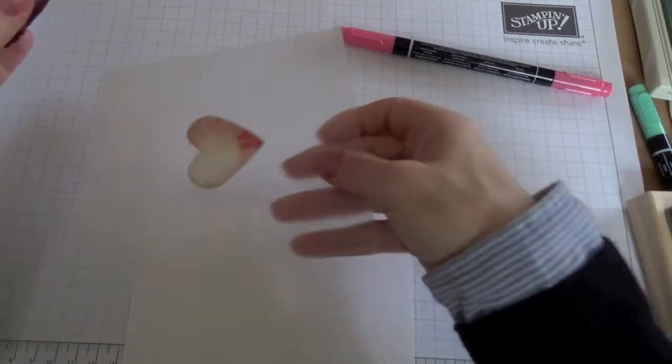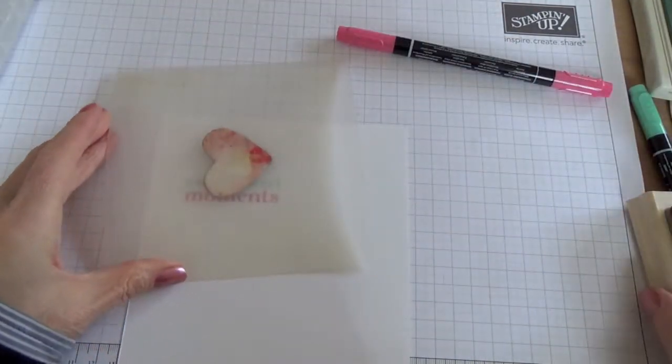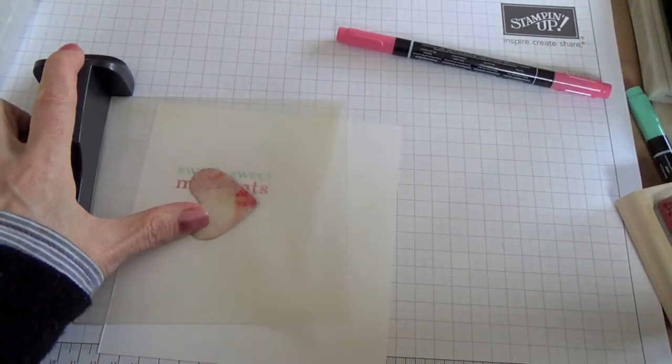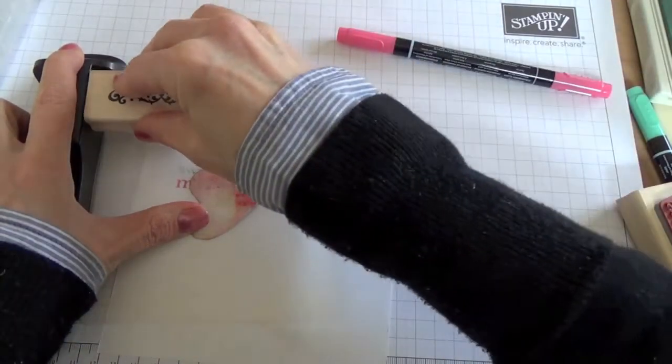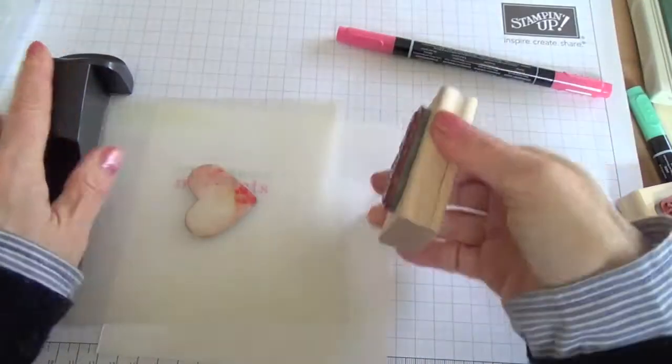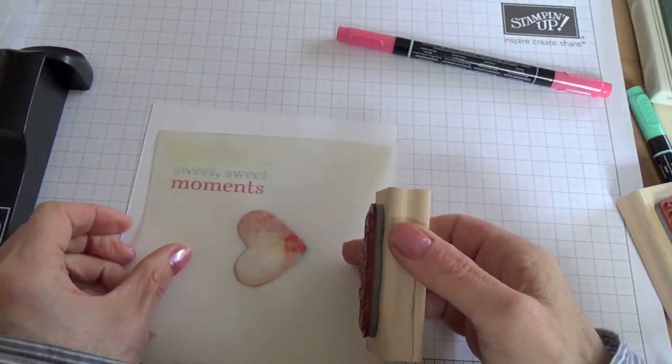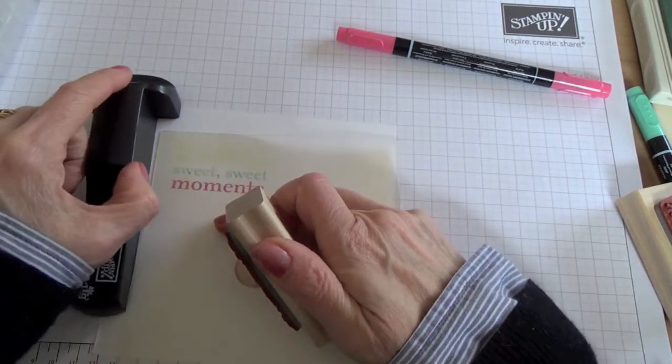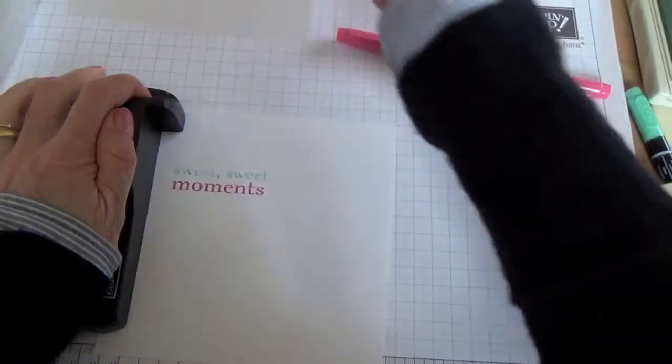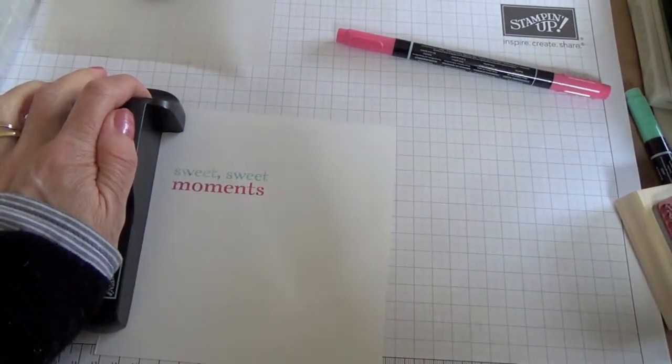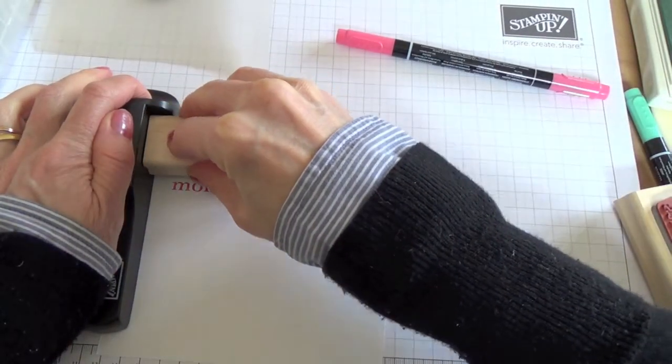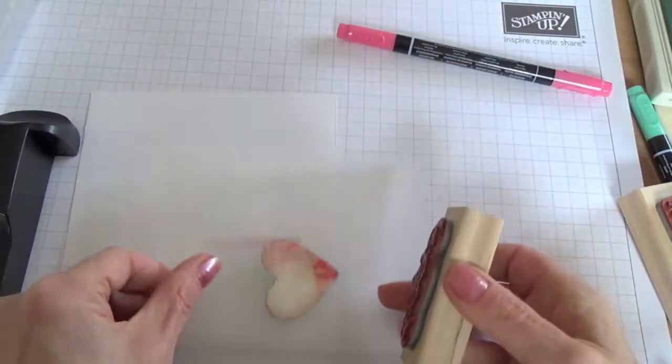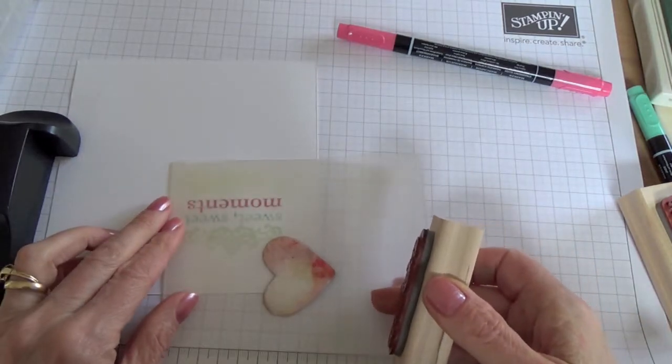Now the best thing for me to do is to use a Stamp-O-Majig to stamp my swirl. If you're using cling mount stamps, you possibly won't need to do that. But I'm going to position my swirl just above my sentiment there. I'm using this lovely Pistachio Pudding ink, which I just love. These gorgeous pastel colours this spring are just amazing.